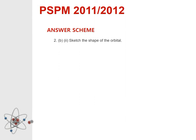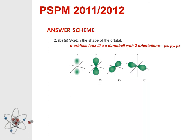Question 2b number 2: Sketch the shape of the orbital. P orbitals look like a dumbbell with three orientations: px, py, and pz. You can draw one of them.